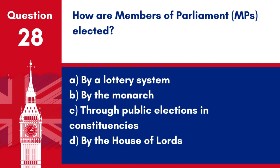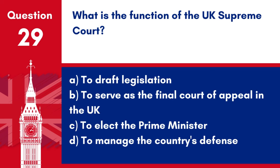Question 28. How are Members of Parliament (MPs) elected? A. By a lottery system. B. By the monarch. C. Through public elections in constituencies. D. By the House of Lords. Answer: C. Through public elections in constituencies. MPs are elected through public elections held in various constituencies across the UK.